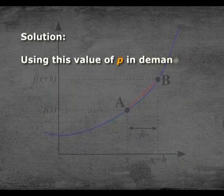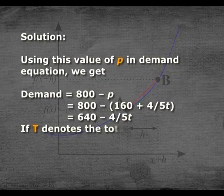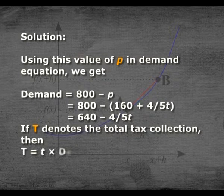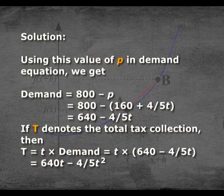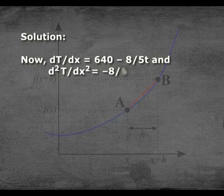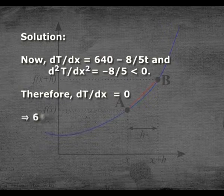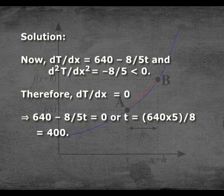Using this value of P in the demand equation, demand = 800 − P = 800 − (160 + (4/5)t) = 640 − (4/5)t. Total tax T = t × demand = 640t − (4/5)t². The first differentiation dT/dt = 640 − (8/5)t, and the second differentiation d²T/dt² = −8/5, which is less than 0. Setting dT/dt = 0 gives 640 − (8/5)t = 0, so t = 640 × 5/8 = 400.